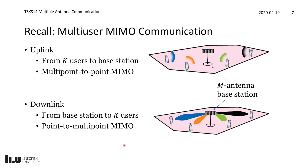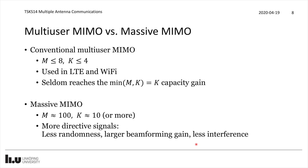We will now use these time-varying channel models and revisit the multi-user MIMO communication from the previous video. We have k users communicating with an m-antenna base station — a multipoint-to-point MIMO system in the uplink, and a point-to-multipoint MIMO system in the downlink. The term multi-user MIMO has been around since the 90s; before that it was called space division multiple access (SDMA), and nowadays the popular term is massive MIMO — short for massive multi-user MIMO.